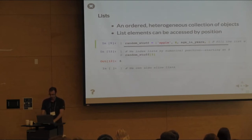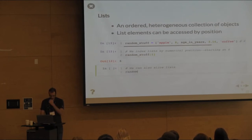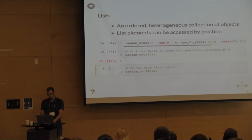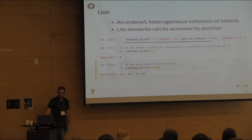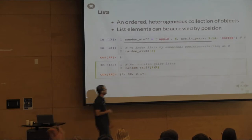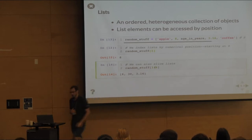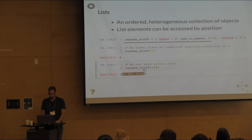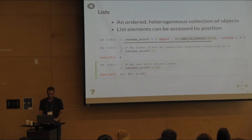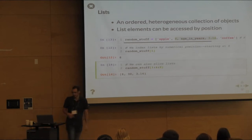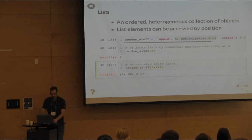We can pull out chunks of a list. The colon means 'up to' — so random_stuff[1:4] means start at position 1 and keep grabbing elements until you hit position 4, exclusive. This gives us elements at indices 1, 2, and 3. You can also pass a step — for example, start at 1, go to 4, but give me every second element. You can also go backwards in the list.